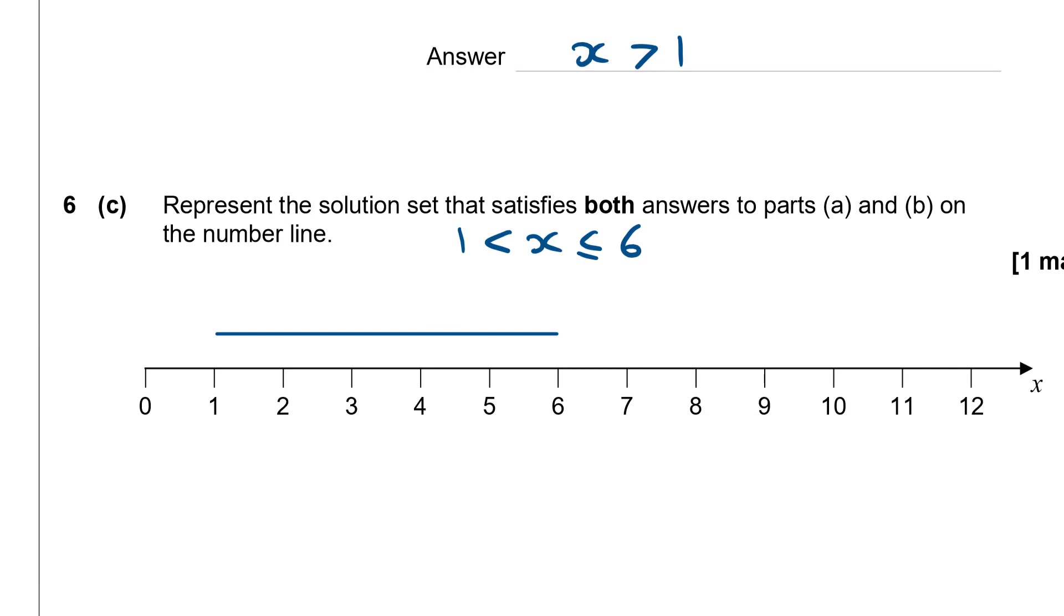Now the ends of the line depend on the sign. So if it's strictly greater than or strictly less than we do an open circle. So at 1 I'm going to have an open circle. And if it includes the end point like at the 6 end we're going to do a filled circle. So because this sign is strictly greater than we've got an open circle. And because this one is less than or equal to sign we've got a filled circle.